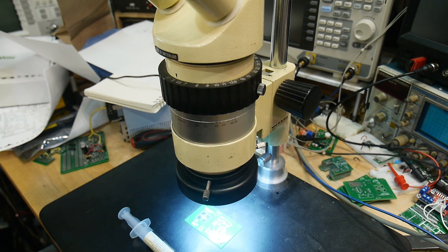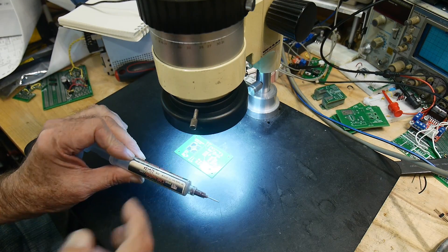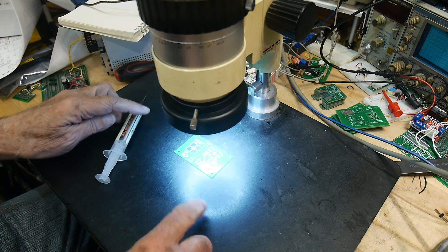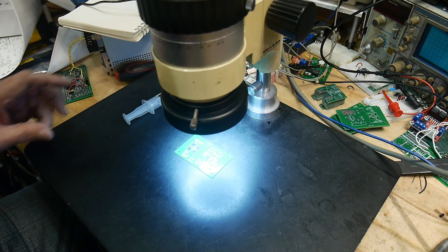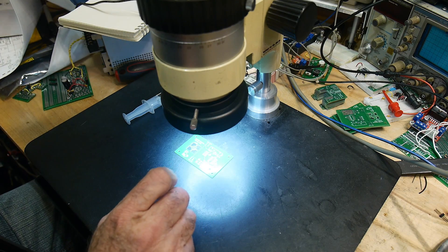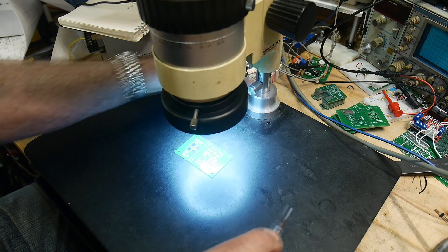Alright, so I'm going to use the microscope and a syringe with solder paste on it. I just put little blobs of solder paste on there, and then with tweezers I'm going to put down the parts. Figure out which ones I need and we'll put them down.